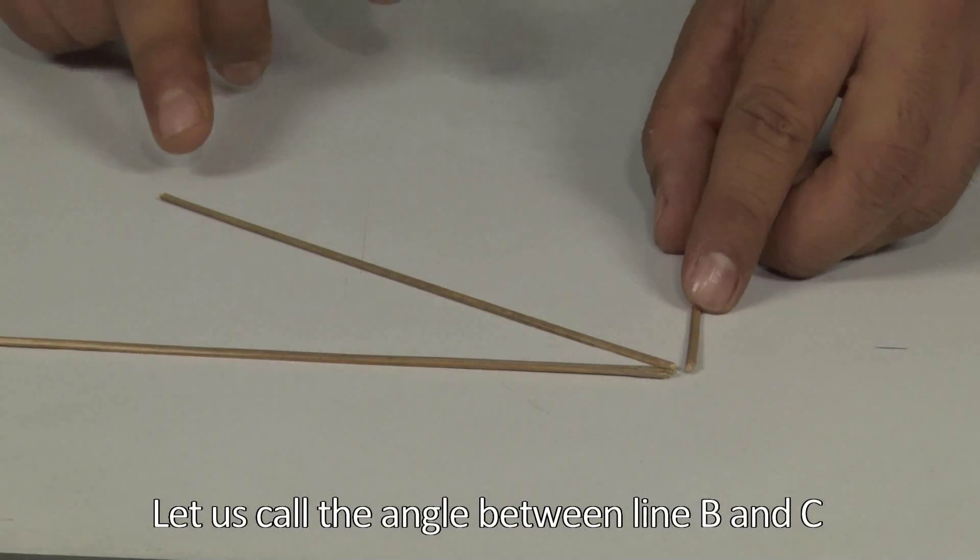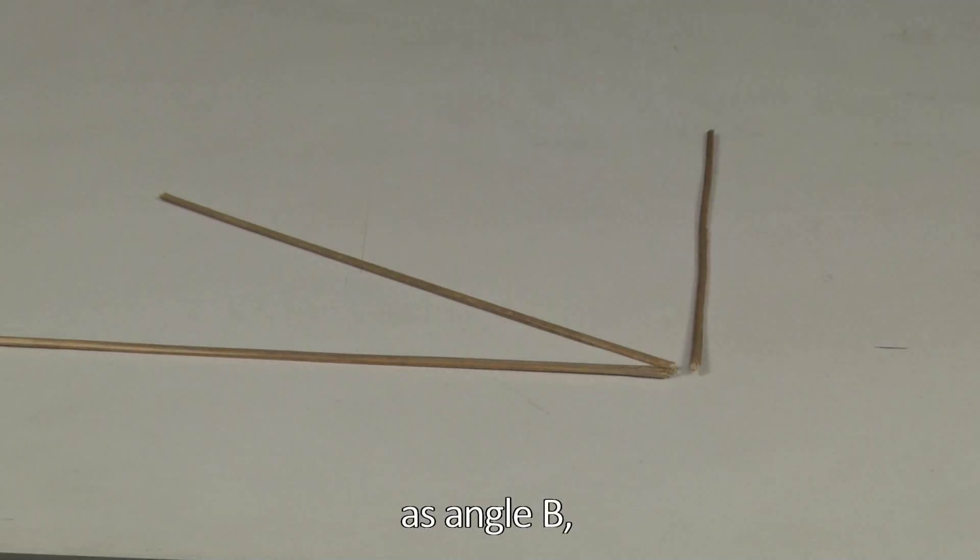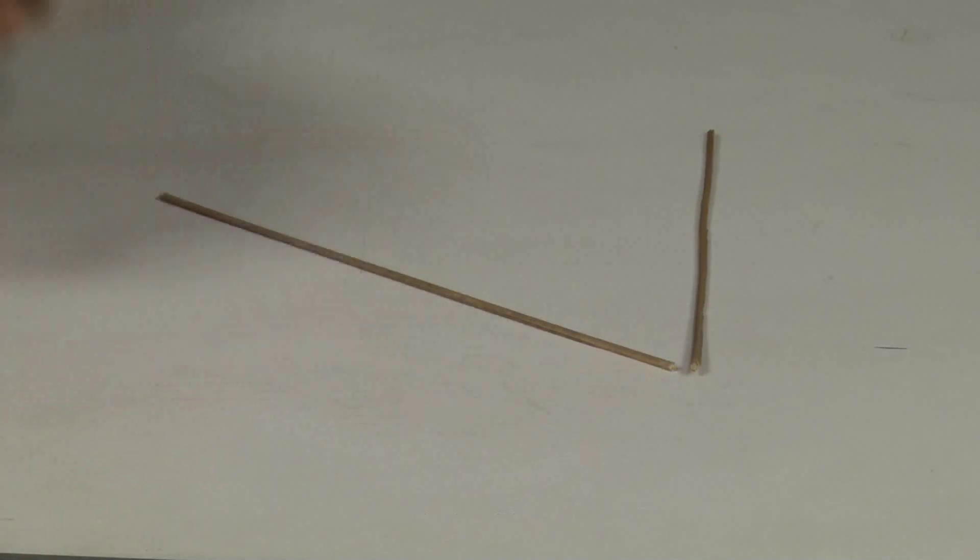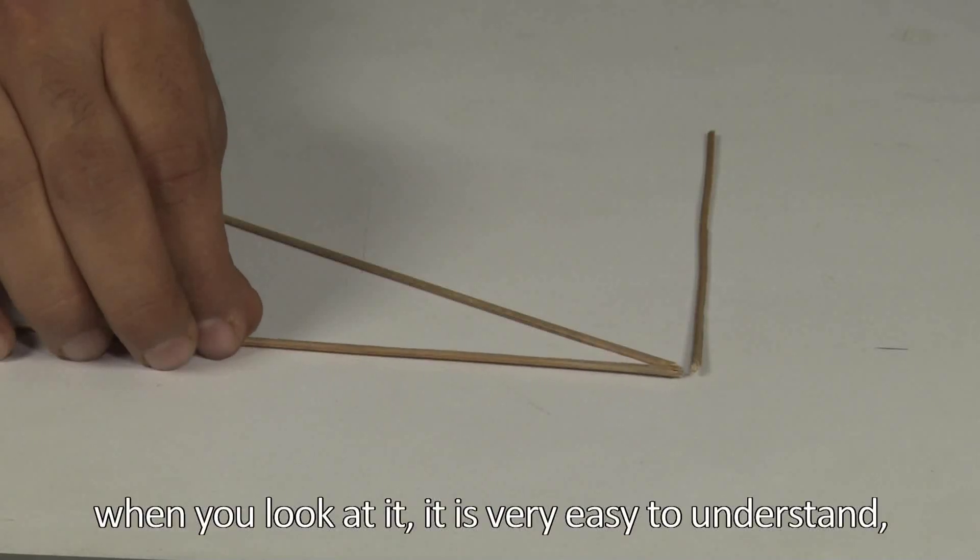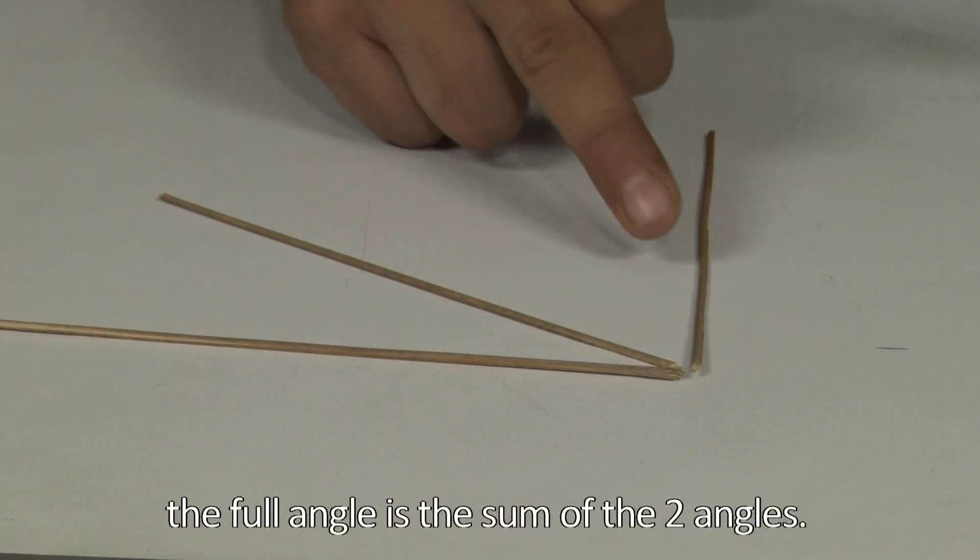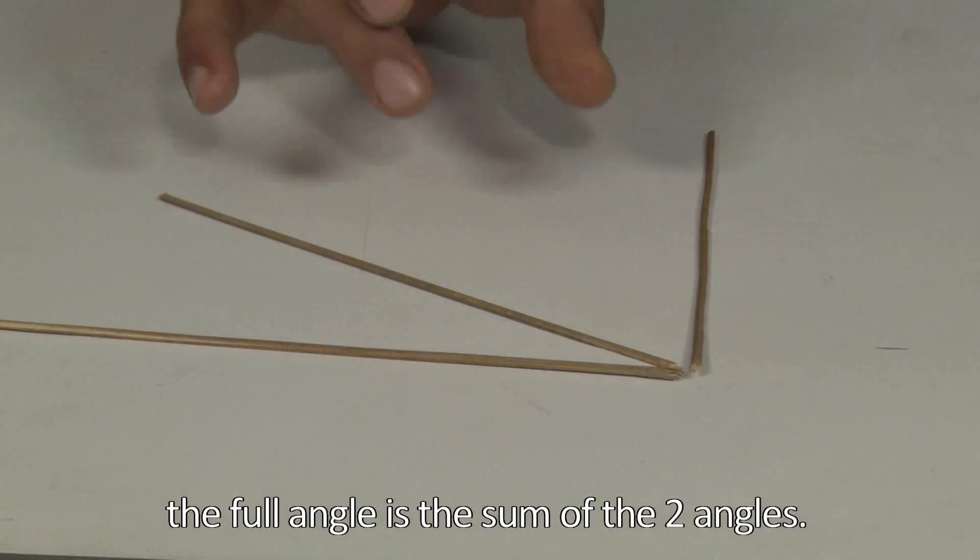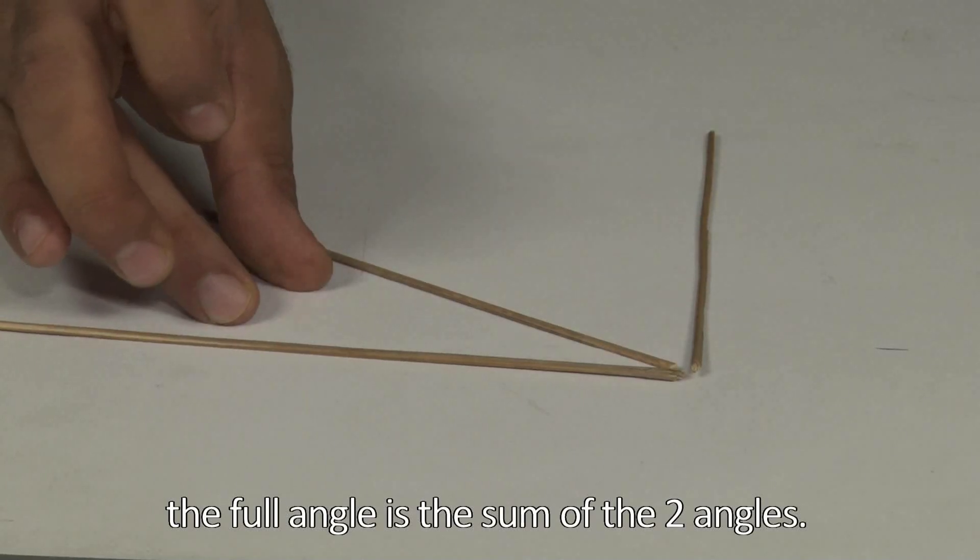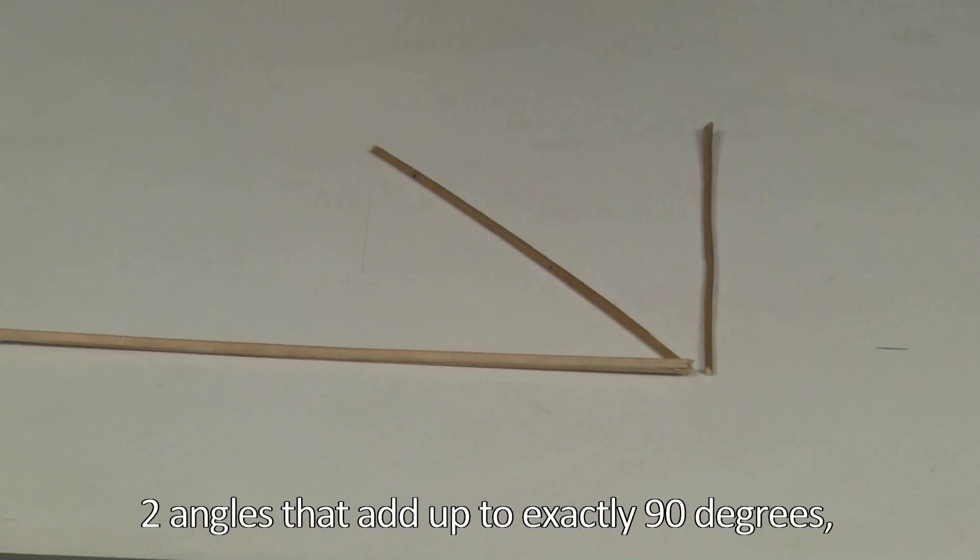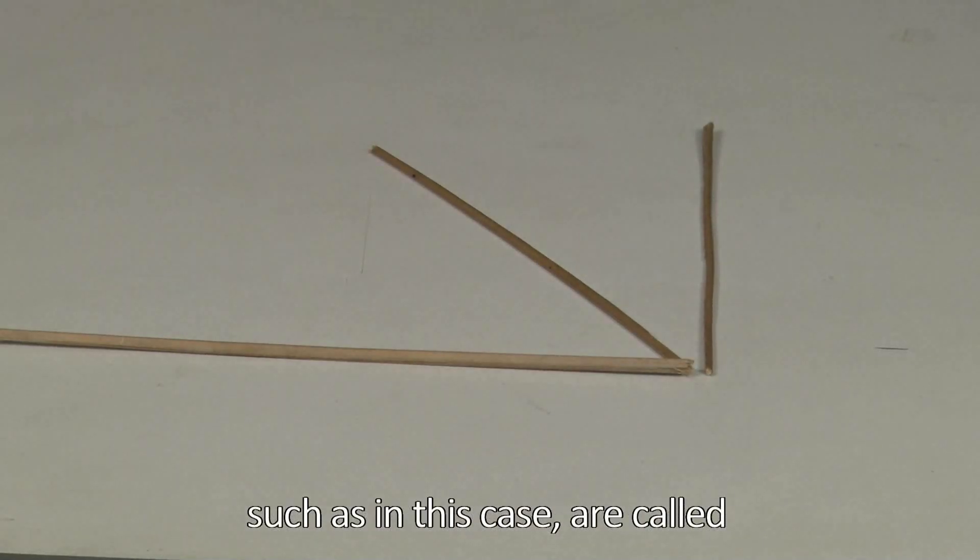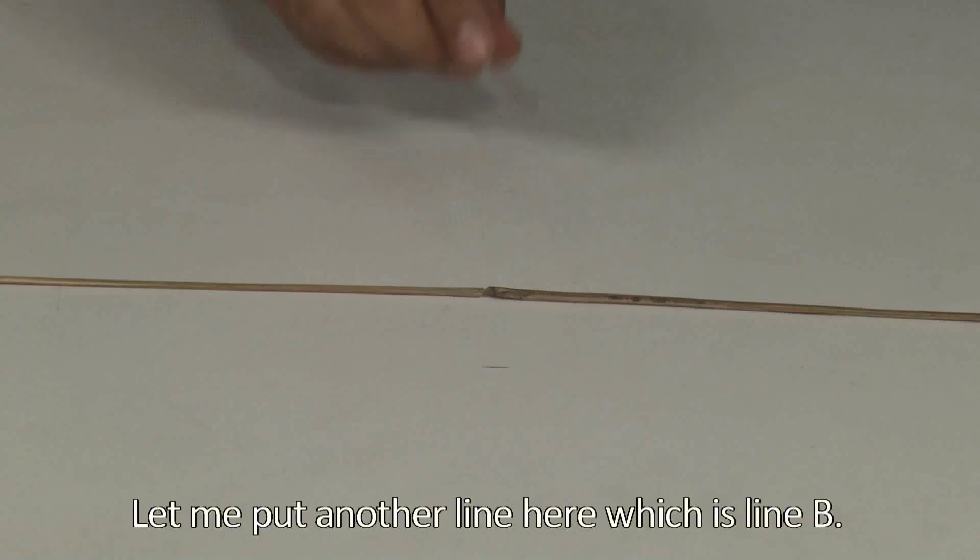All right. Now when you look at it, it's very easy to understand. The full angle is nothing but the sum of the two angles. Two angles that add up to exactly 90 degrees, such as in this case, are called complementary angles. Let me put another line here, which